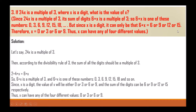Thus x can have any four different values. According to the divisibility rule of 3, the sum of all the digits 2 + 4 + x = 6 + x should be a multiple of 3. Since x is a digit, the value of x can be either 0, 3, 6, or 9, giving sums of 6, 9, 12, or 15 respectively. Thus x can have any of the four different answers: 0, 3, 6, or 9.